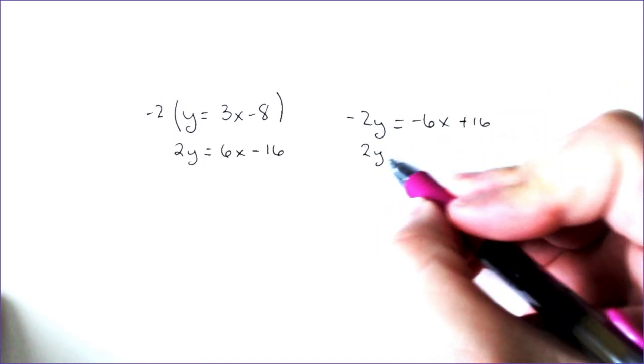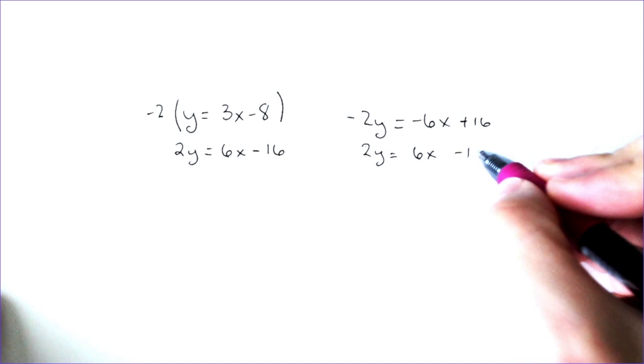And underneath that, I'm just going to write the other equation, 2y, 6x, negative 16.